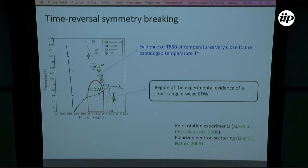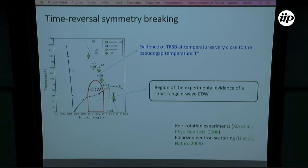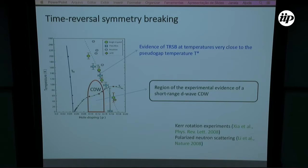Another very puzzling piece of evidence regards time reversal symmetry breaking, provided by polarized neutron scattering by the group of Philippe Bourges and Kerr rotation experiments by the group of Kapitulnik. They measured evidence of time reversal symmetry breaking at temperatures which are very close to the pseudo-gap temperature. There is also a region of experimental evidence of short-range d-wave charge density wave, and a dip in the superconducting dome suggests the charge order phase competes with superconductivity.